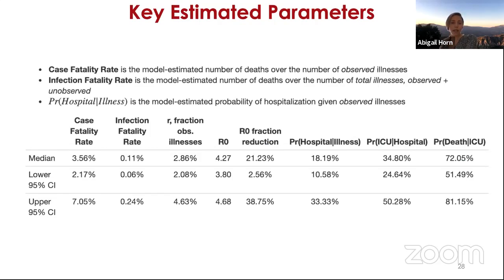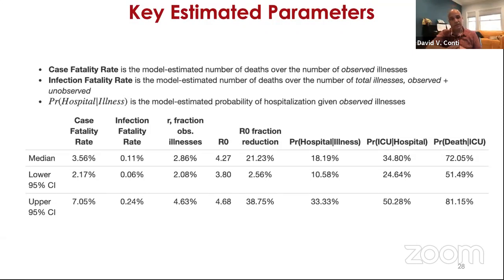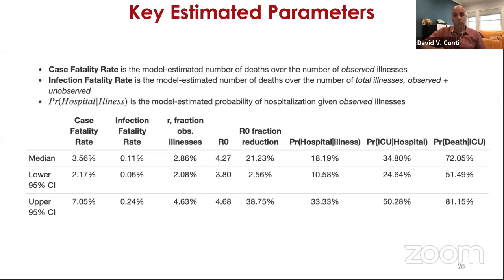Dave reviews key parameter estimates. The case fatality rate is estimated at about 3.56% and the infectious fatality rate at about 0.11%, for general LA County excluding nursing homes. The fraction of observed illnesses is very low — approximately 2.8% — based on one seroprevalence study from early April. This fraction may have changed over time as testing volume has increased, requiring updated seroprevalence studies. The probability of death given ICU is estimated at around 72%, even excluding nursing home counts.